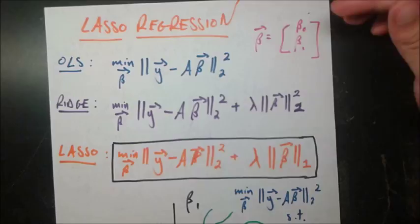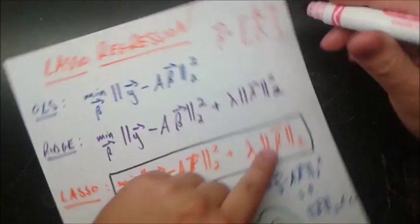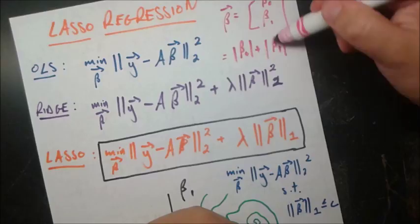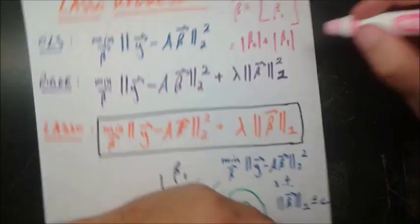The L1 norm of the beta vector is simply absolute value beta naught plus absolute value beta 1 and as you add more beta coefficients here you can just keep adding the absolute values of them to get the L1 norm. Okay so that's what the L1 norm is and this is again a user defined parameter.